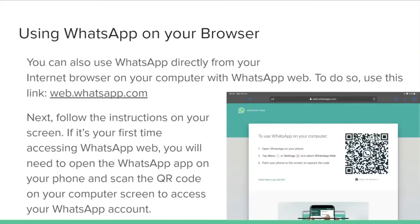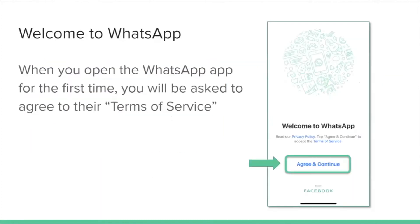You can also use WhatsApp directly from your internet browser on your computer with WhatsApp Web. Go to web.whatsapp.com and follow the instructions on your screen. If it's your first time accessing WhatsApp Web, you'll need to open the WhatsApp app on your phone and scan the QR code on your computer screen to access your account.